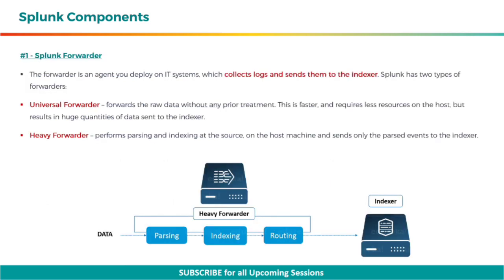The Splunk Forwarder is an agent you deploy on IT systems, which collects logs and sends them to the indexer. Splunk has two types of forwarders. First is the universal forwarder, that forwards the raw data without any prior treatment. This is faster and requires less resources on the host, but results in huge quantities of data sent to the indexer. Second, we have the heavy forwarder, that performs parsing and indexing at the source on the host machine, and sends only the parsed events to the indexer.